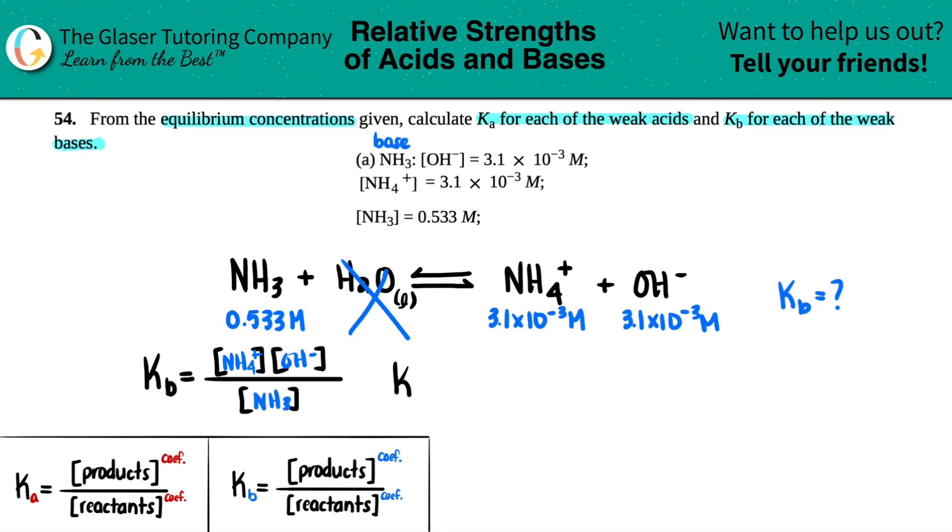Let's plug in the numbers. Kb equals products divided by reactants: 3.1×10^-3 times 3.1×10^-3 divided by 0.533.